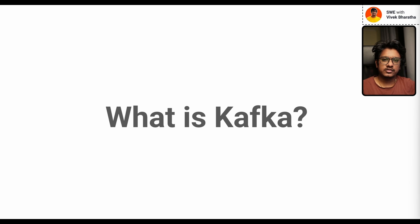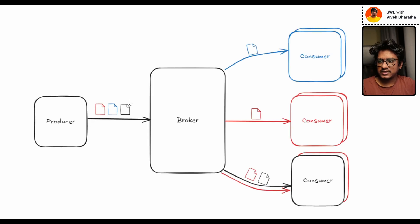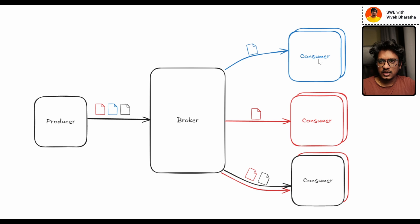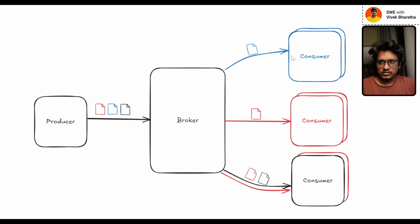Now let's move on to a simple demonstration of how data flows from producer to consumer via Kafka. In simple terms, producers send different messages to a broker. On the other side, we have a set of consumers — if you see this representation in blue color, there are multiple consumers. You can treat this as a consumer group, which I will cover shortly. For now, assume this is one simple consumer.